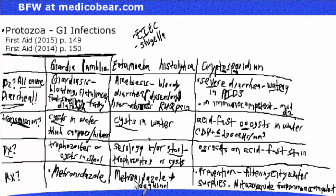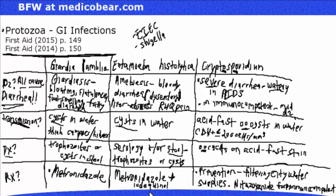Returning to metronidazole: it is bactericidal, meaning it kills and destroys bacteria — not bacteriostatic, which merely stops bacteria from reproducing. It forms free radical toxic metabolites in the bacterial cell that damage DNA. Side effects include a disulfiram-like reaction when taken with alcohol, headaches, and a metallic taste. It can also treat Trichomonas, Gardnerella vaginalis, and anaerobes like Bacteroides and C. difficile below the diaphragm.